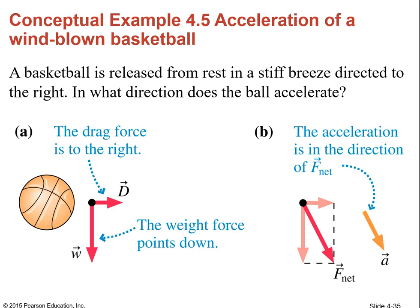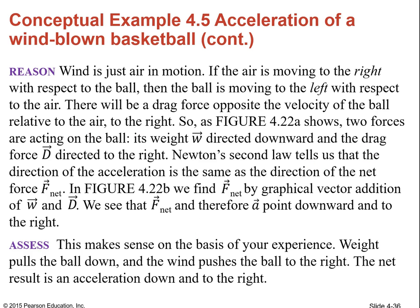Example: a wind-blown basketball released from rest in a stiff breeze directed to the right. Weight pulls the ball down and wind pushes it to the right, giving a downward vector and a rightward vector. We can resolve them using the tip-to-tail method or by completing the parallelogram, and we see the net force goes diagonally down and to the right — which is also the direction of the acceleration. The wind should move the ball in that combined direction.